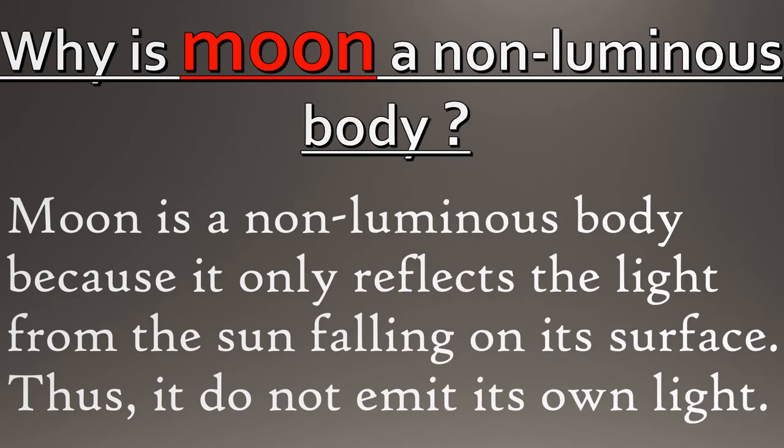Moon is a non-luminous body because it only reflects the light from the sun falling on its surface. Thus, it does not emit its own light. And as we are aware, the objects which do not have their own light are termed as non-luminous. It doesn't matter if they are naturally occurring sources or are made by man.